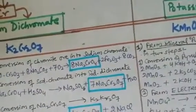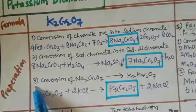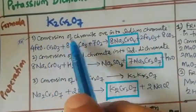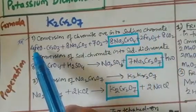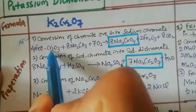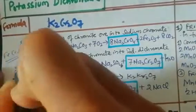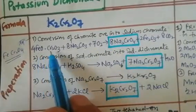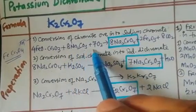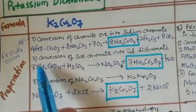K₂Cr₂O₇ can be prepared in three steps. Step one is the conversion of chromite ore into sodium chromate. Chromite ore, FeOCr₂O₃ (also written as FeCr₂O₄), reacts with sodium carbonate in the presence of oxygen. Four molecules of iron chromate react with sodium carbonate in the presence of seven oxygen to give eight sodium chromate, iron oxide, and carbon dioxide.